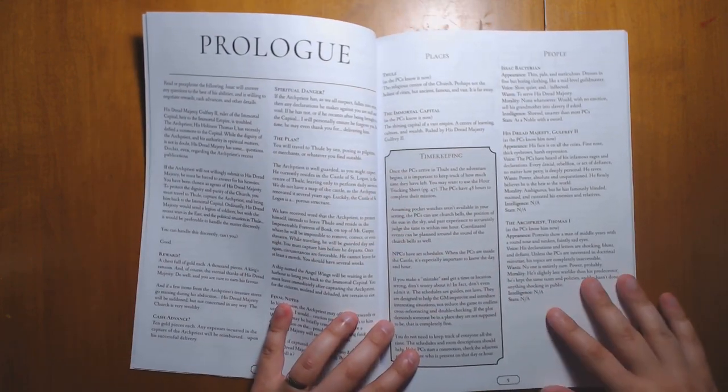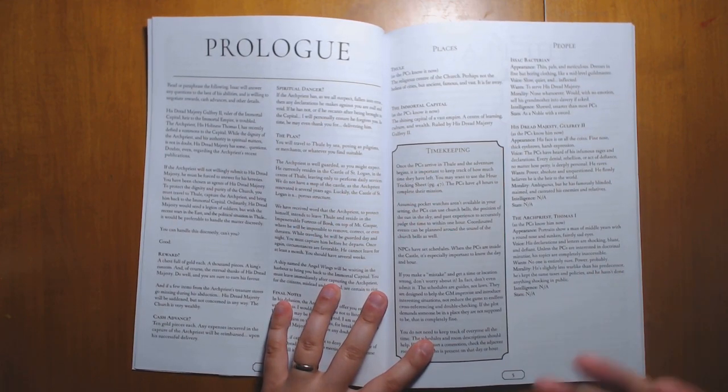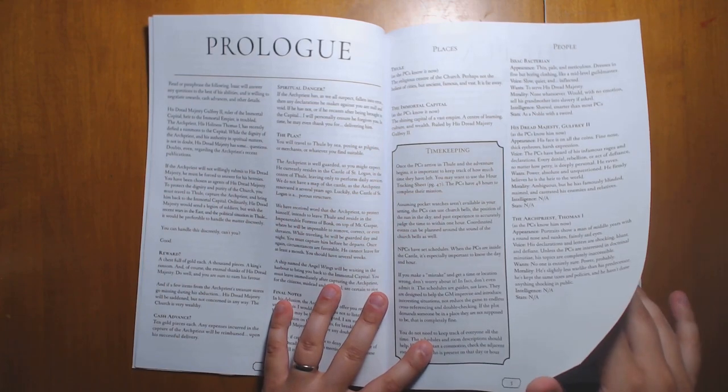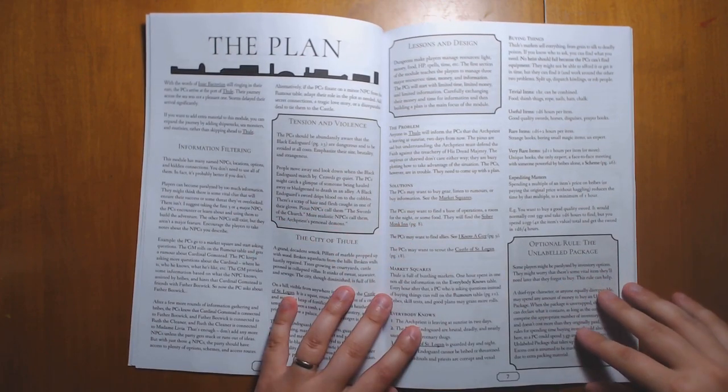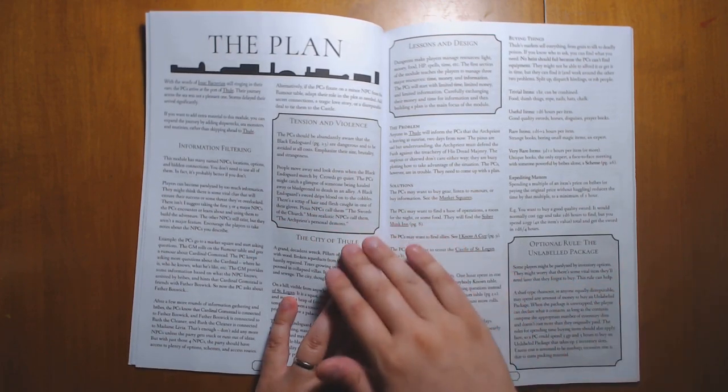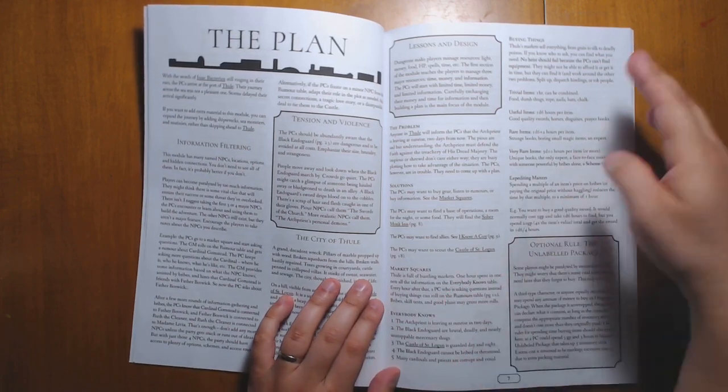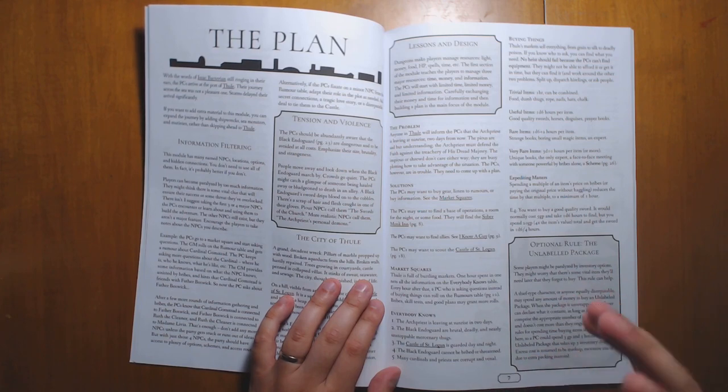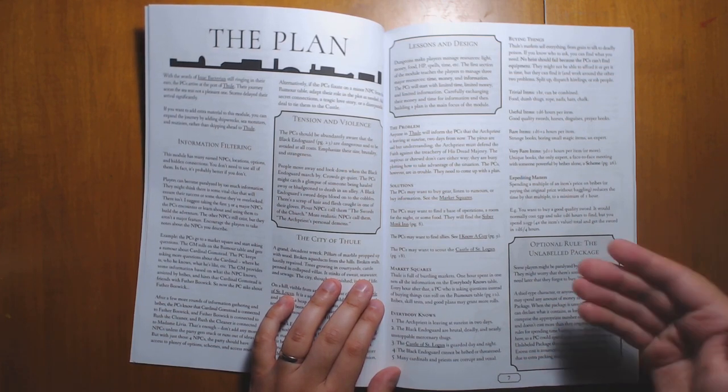General prologue - what's the backstory of this heist? Why does the archpriest need to be captured? Who are his political enemies that set you up to do this? Including some rundowns of the people who are interested in the kidnapping. Some general information about the city of Thule, the problems, things that everyone generally knows, ways you can go about buying things. In other words, a lot of really simple tools that make running the module easier and allow for planning to be easier.